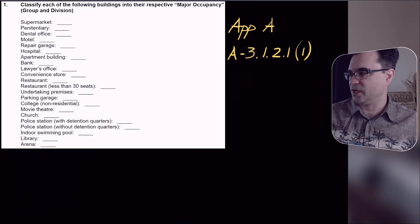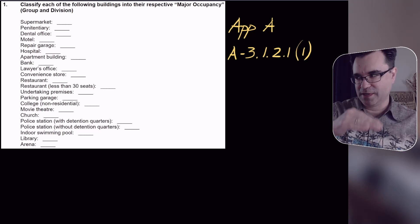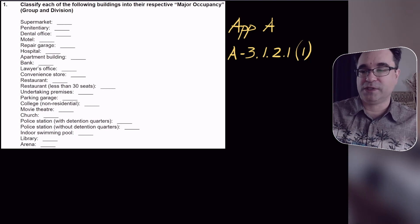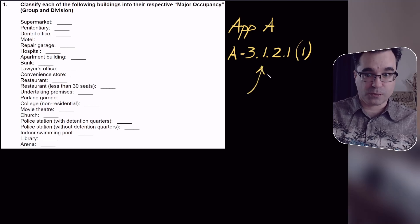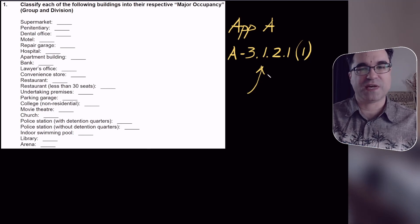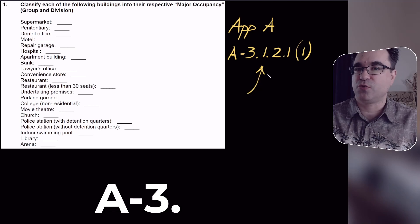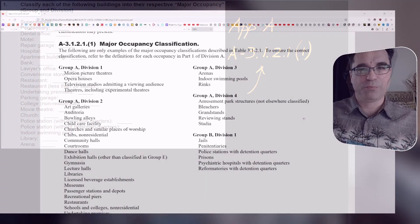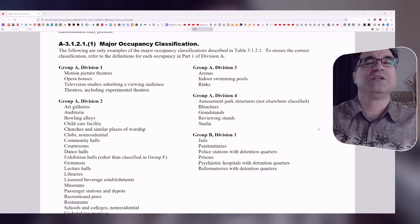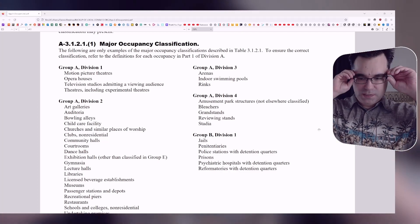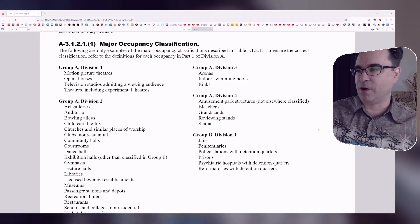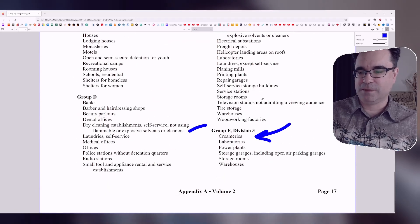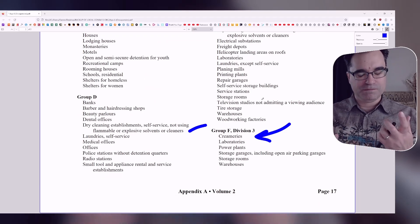I want to show you the question we're going to be covering. We're not going to cover every single one of these questions — we're going to do some of them, because as we start doing some, it will make sense how to do all of them. We're definitely going to be using Appendix A, sentence A-3.1.2.11, which has a whole bunch of different examples of the different major occupancies depending on the building classification — everywhere from Group A Division 1 all the way to Group A Division 3. Let's get started.